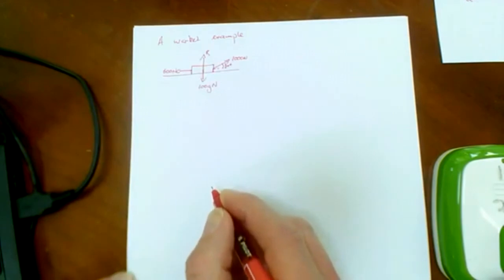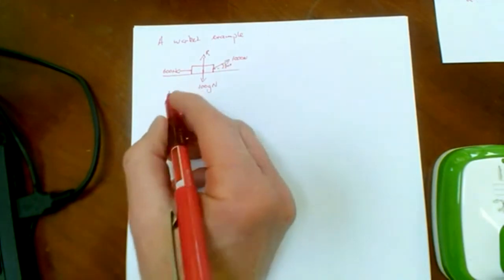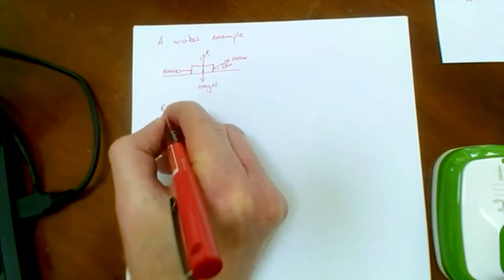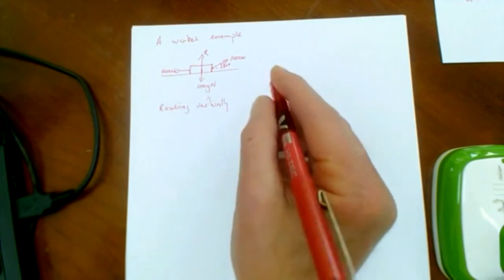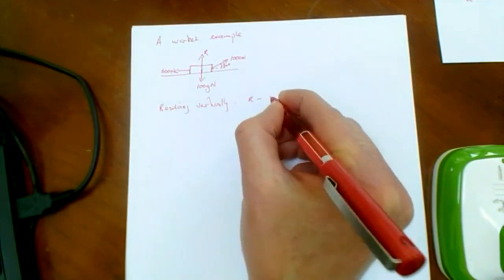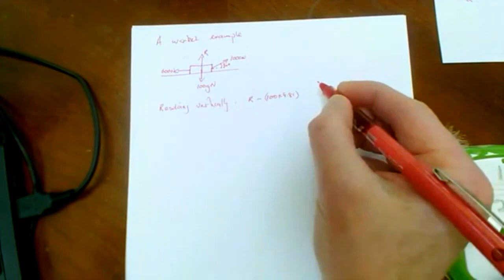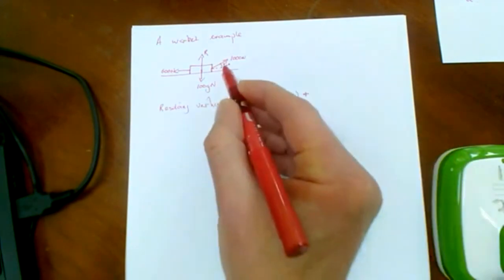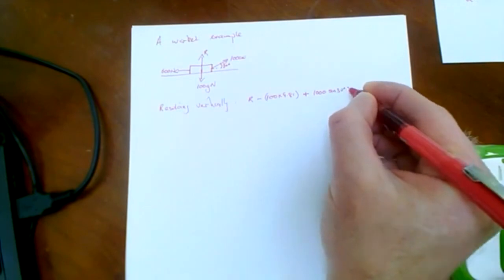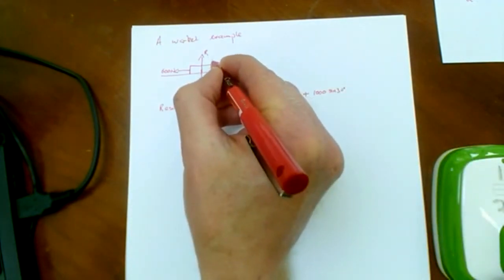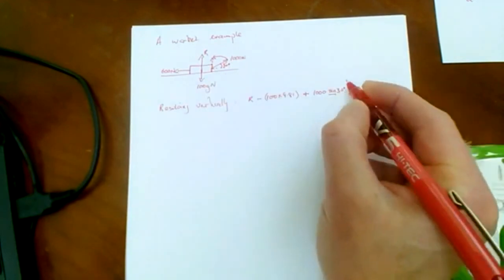So if we resolve vertically, we would have R minus 100 times 9.81, which is that, plus the component of 1000 vertically. Well that's 1000 sine 30 degrees. Because if you remember what I said, we want the vertical component. So we have to rotate away from the angle to get to the vertical, and that means we use the sine of the angle.